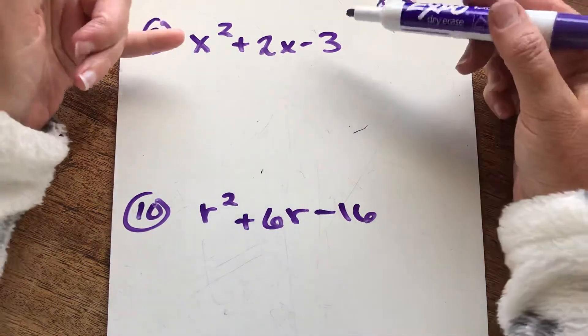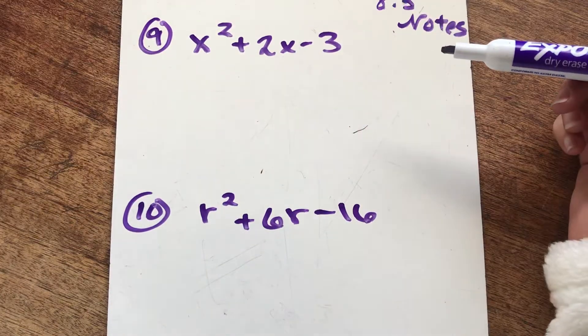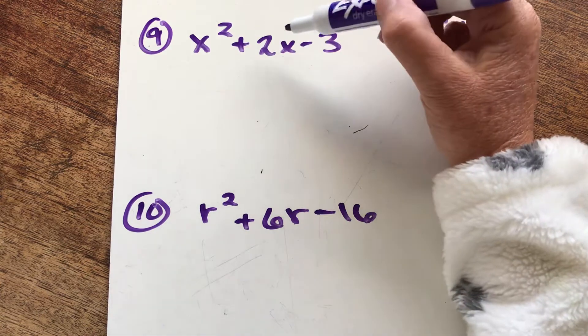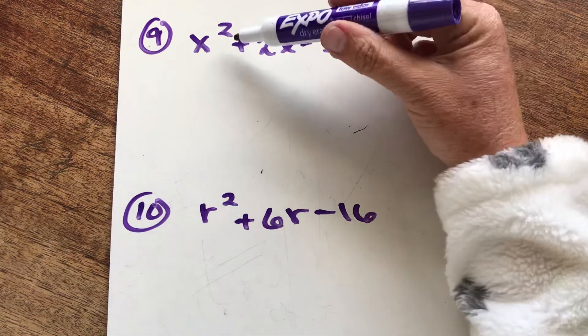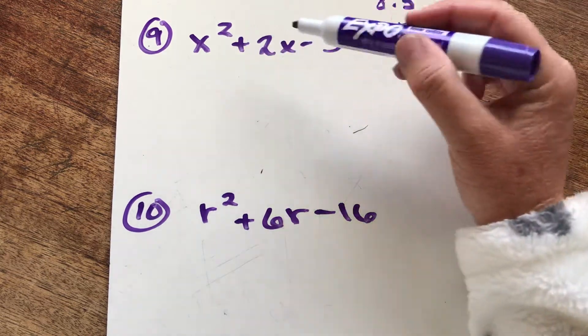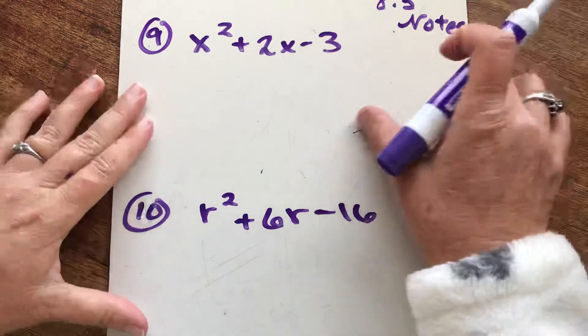So we have this beautiful trinomial, one, two, three pieces long. Let's continue with the strategy we've been using. Notice I don't see plus plus. I don't see negative first and then plus like I was seeing in the previous ones. I'm seeing plus and then negative. Plus and then negative. I wonder if these make it so different. Let's see.